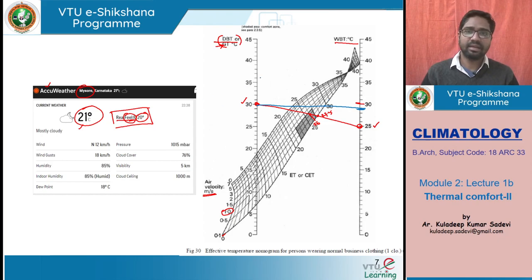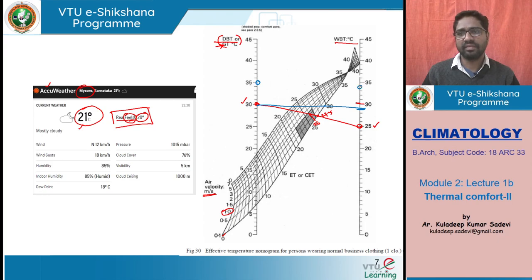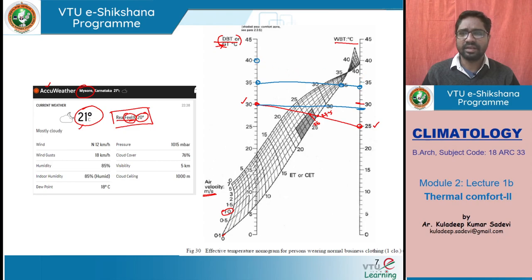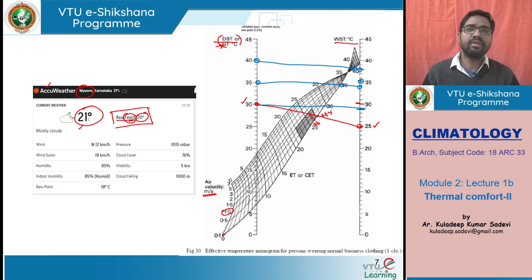Let us say if the outdoor reading is 35 degrees centigrade and it is an over-humid place with higher humidity, and the wet bulb temperature reading is around 34 degrees centigrade — joining these, the actual feeling goes to 35 degrees centigrade. But if it goes beyond this, say 40 degrees centigrade, it will drastically differ. For example, if the dry bulb temperature is 40 degrees and wet bulb is 38 degrees, joining these two, your feeling is beyond or near 40 degrees centigrade. So based on dry bulb, wet bulb, and velocity, your comfort levels keep varying.